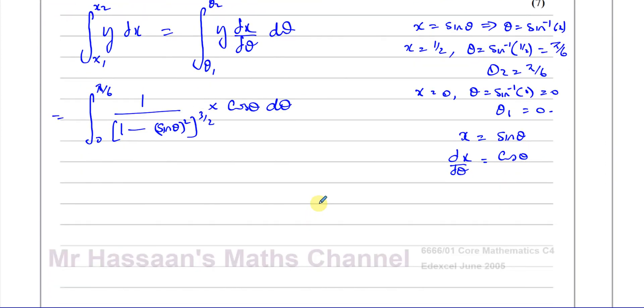Now, everything is in terms of theta. I'm just going to try to simplify this into something that we can integrate. So we've got our limits now, pi over 6 and 0. We have 1 over, this is like 1 minus sine squared theta. Now, I think changing that to cosine squared theta is going to help us. So it's going to be cosine squared theta to the power of 3 over 2, times cosine of theta d theta.